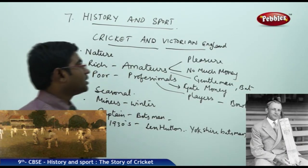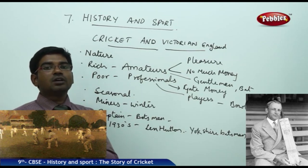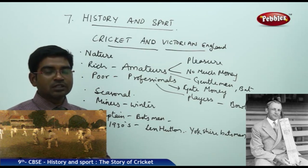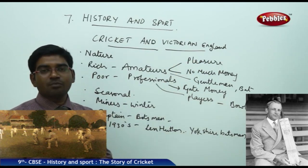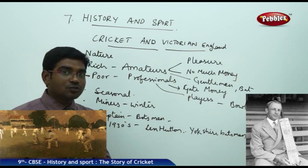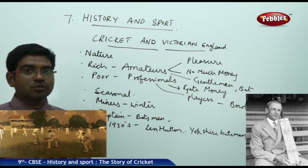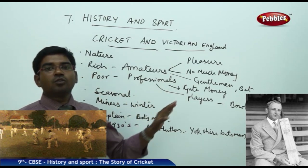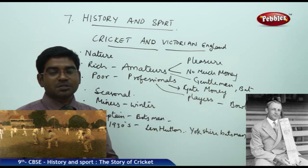Cricket and Victorian England: the nature of English society is clearly reflected in how the game was organized. The rich people who played for pleasure are known as amateurs, also called gentlemen. They played for pleasure and earned no income from the game. These gentlemen preferred to bat first and always liked batting, leaving the harder, tougher parts — bowling, running, fast bowling — to the poor. For the poor, it was seasonal employment; they were known as professionals who received gate money as payment for playing.